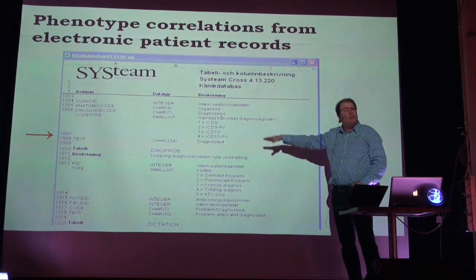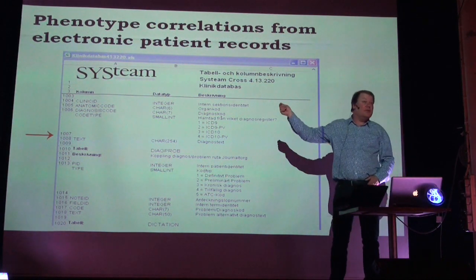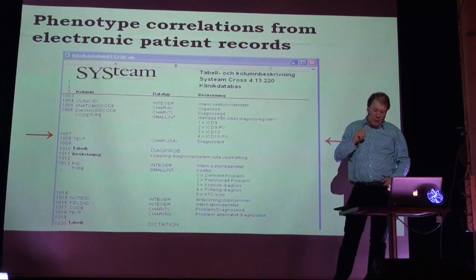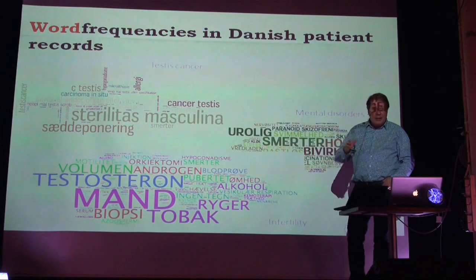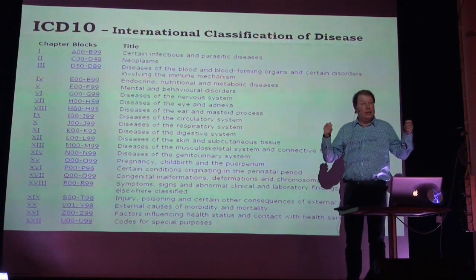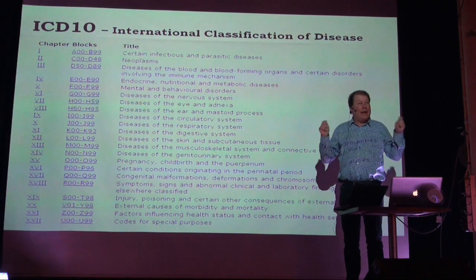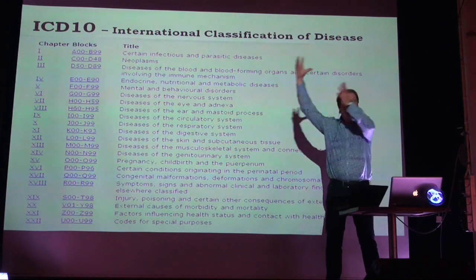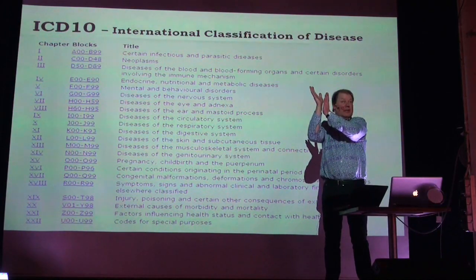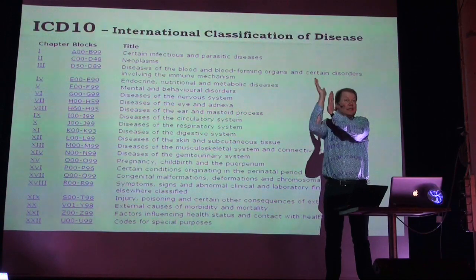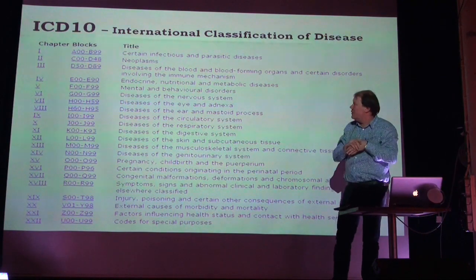A patient record is full of measurements - biochemical things, blood pressures, and a lot of other data - but there's also a lot of text that doctors write about your disease. We can get out the word frequencies using the same kind of method. We just need a controlled medical vocabulary to bring all patients into the same space so we can compare Mr. Hansen and Mrs. Peterson from the text found in their patient records.